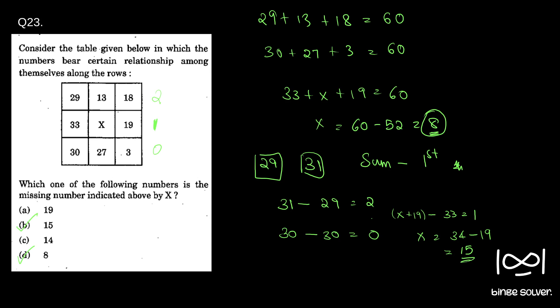In the official UPSC key it was given B or D, so both are marked as answer by the official UPSC key. First one uses a simple logic, all the sum of three elements is 60 in the first and third row, so we can definitely apply that logic here in the second row which gives 8 as answer.